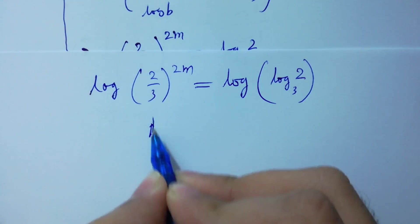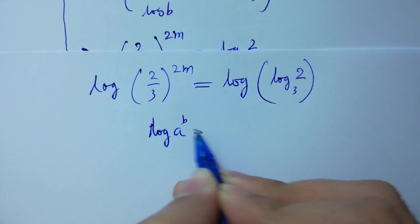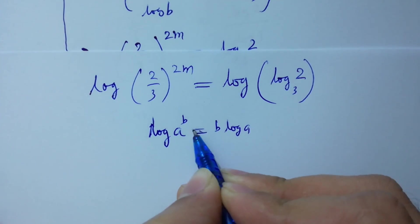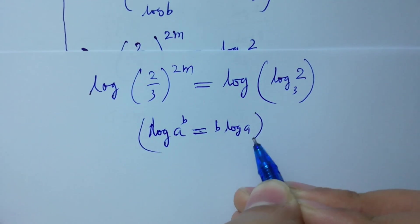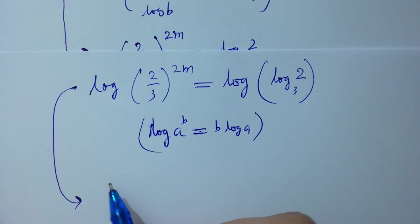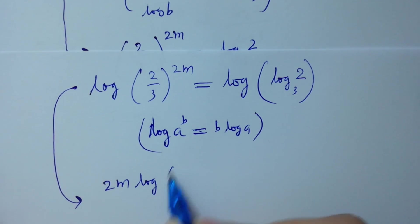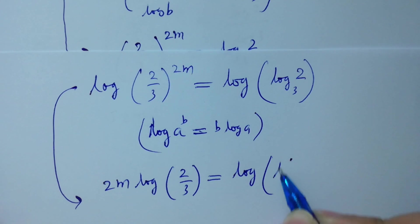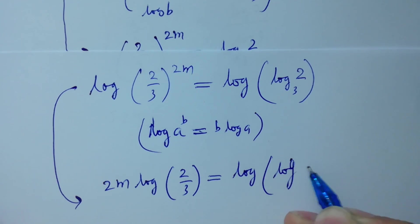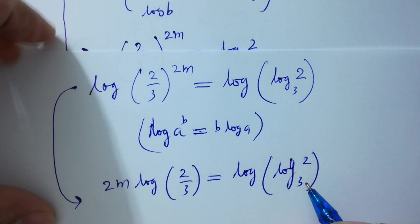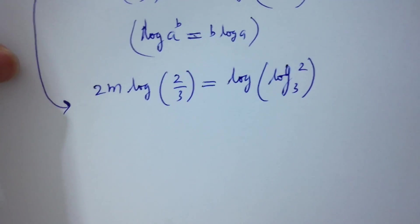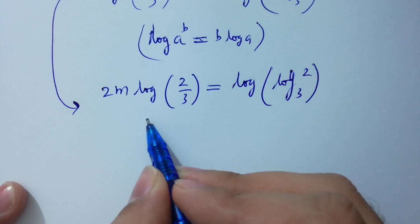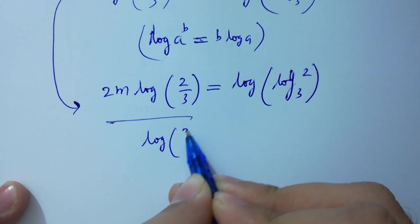Since log a to the power b equal to b log a, as I have already told about it, we have 2m times log 2 over 3 equal to log of log 2 to the base 3. Now divide on both sides by log 2 over 3.